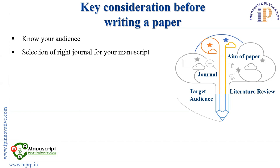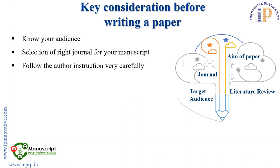The next is selection of the right journal for a manuscript. The journal should be properly matched to your paper — as an author, you should select a journal as per your research topic. More or less, it should fall under the aim and scope of the journal. Next, follow the author instructions very carefully. Before submitting or even before writing a paper, it is very important to check the author instructions of that particular journal.